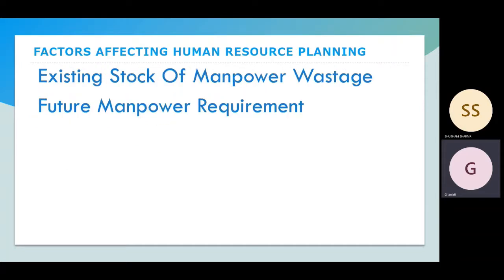Next are the factors affecting human resource planning. The first factor is the existing stock of manpower — how many skilled, semi-skilled, and unskilled persons we have, their qualifications, age, date of retirement, and chances of promotion. The second factor is future manpower requirements — how many persons will be needed in the future, according to company plans, government employment policy, demand and supply of manpower, and projected production levels.